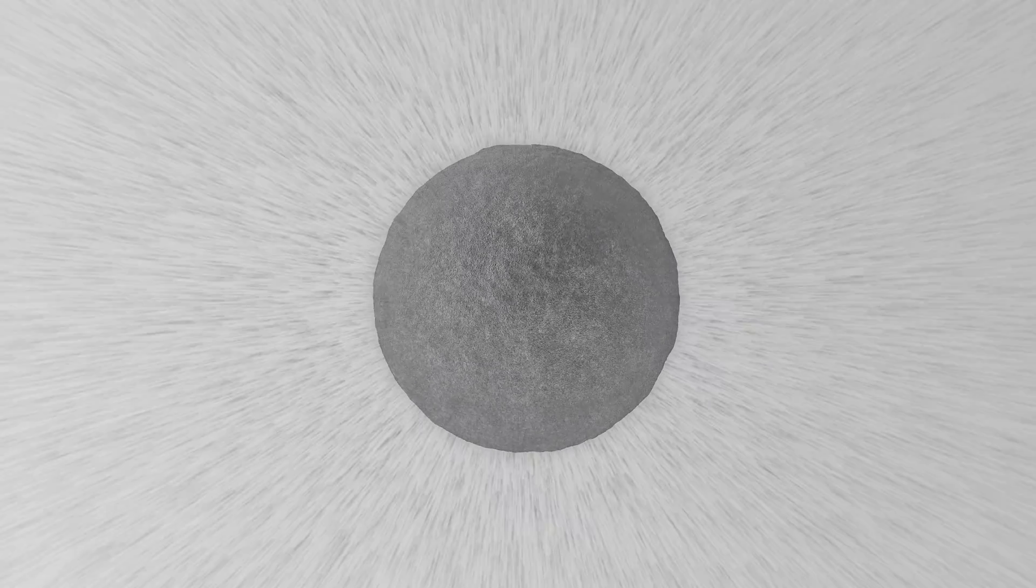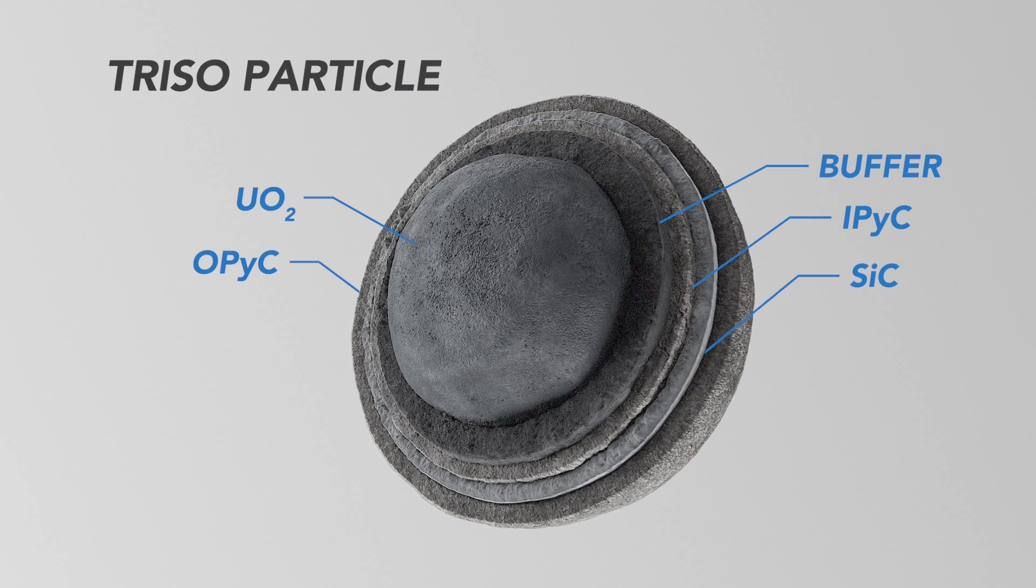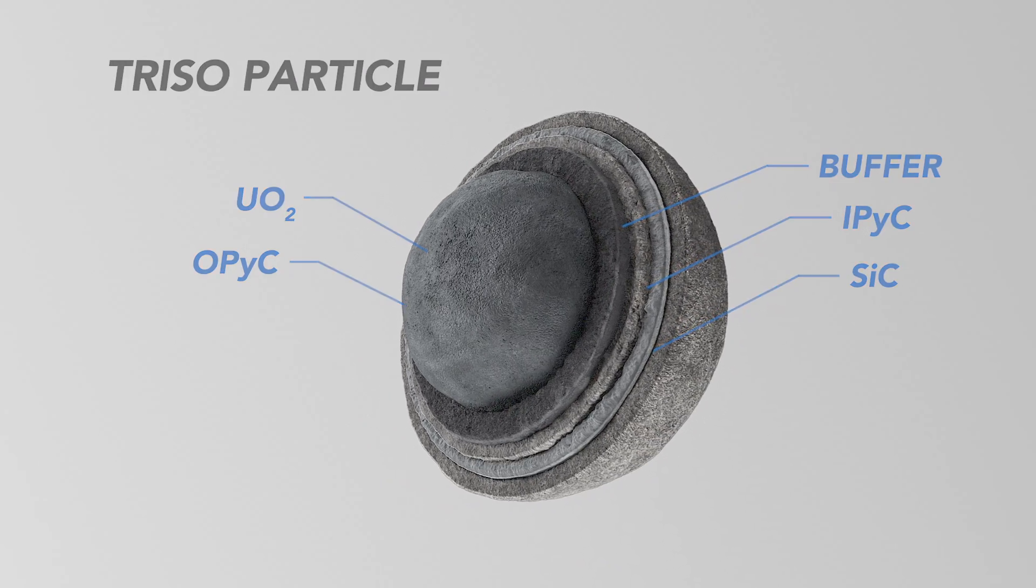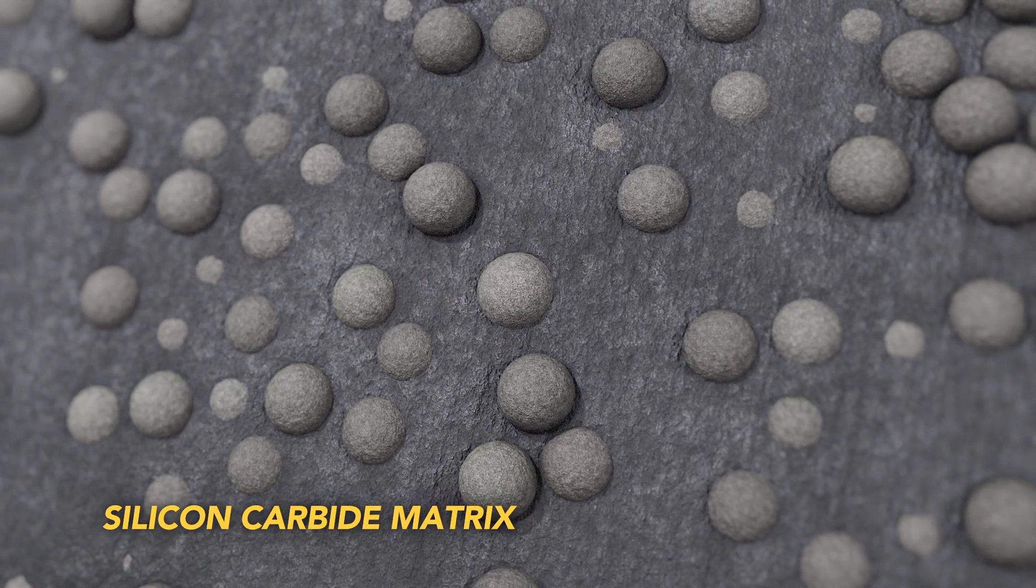In FCM fuel, millimeter-sized bits of uranium are trapped in tiny ceramic pressure vessels that can withstand extreme temperatures and radiation. These particles are then encased within a fully dense silicon carbide matrix, somewhat like encasing the fuel in a diamond.